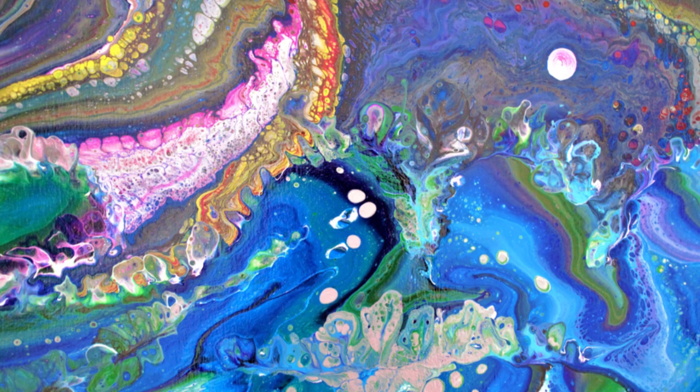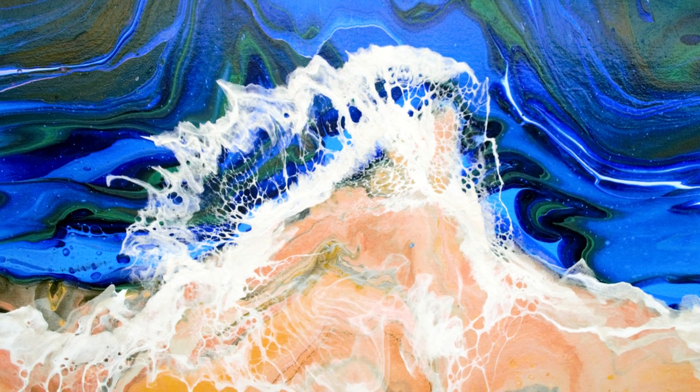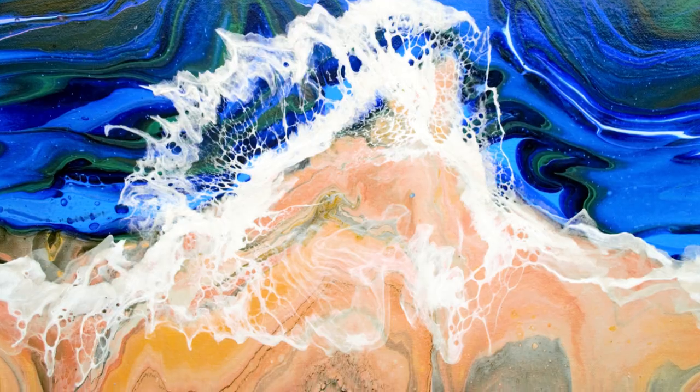I let the canvas dry again and sealed it with some clear spray gloss. I believe I had Rust-Oleum on hand. When the Floatrol dries it leaves the canvas with a semi-gloss finish but I like to seal it to protect it.